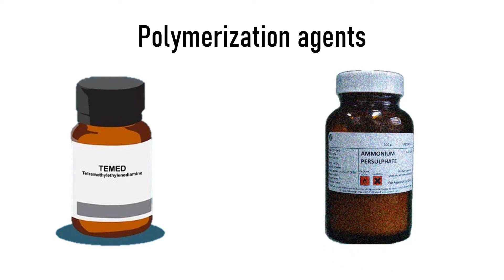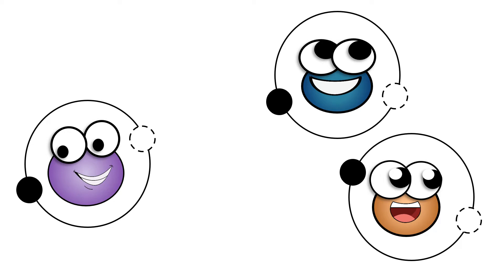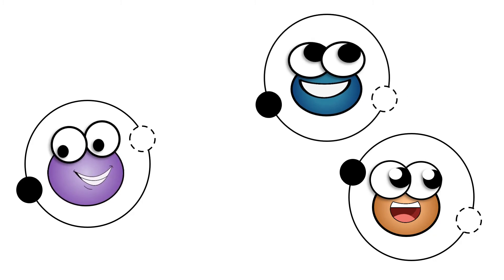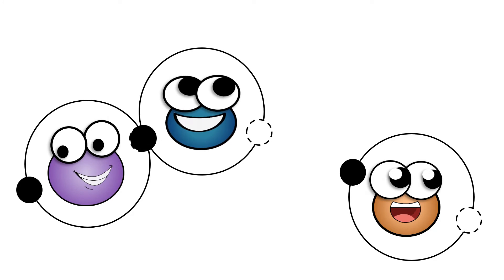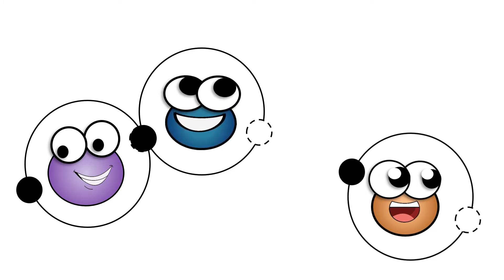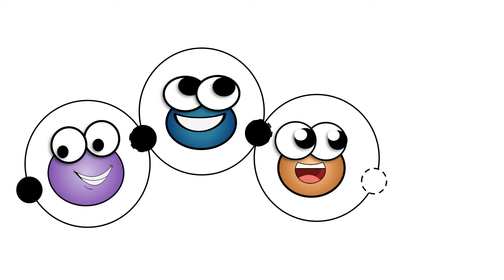TEMED decomposes APS to give free radicals. Free radical species are highly reactive — they have an unpaired electron and so they want one more electron. A single bond forms with the unpaired electrons of the outer shell of the monomers, thereby creating an equally reactive radical. The radical reacts with another monomer and forms a single bond, and the chain reaction continues leading to the formation of linear chains.